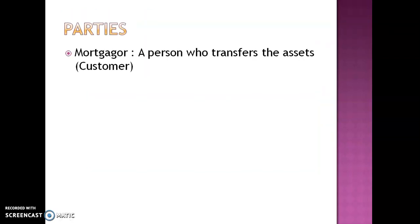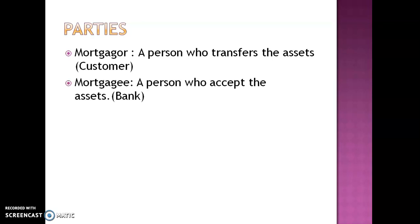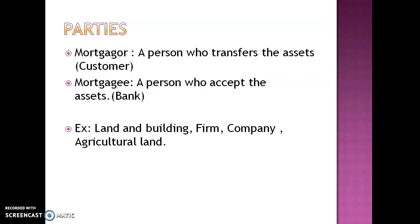The parties of mortgage are: mortgager — a person who transfers the asset, that is the customer who transfers his house to the bank; and mortgagee — a person who accepts the asset and sanctions the loan amount against that collateral security, that is the bank. Examples of mortgage include land and building, firm, company, and agricultural land — all immovable assets that cannot be moved from one place to another. All immovable assets create a charge under mortgage.